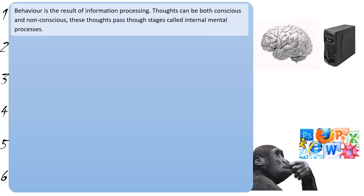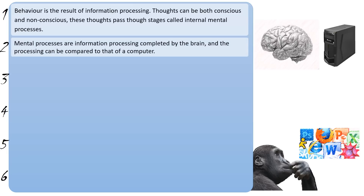One analogy that cognitive psychologists like to use is the idea that the brain is very similar to a computer. Just as a computer processes information and puts it on display, your brain processes information and then that results in outputs like movement and speech.